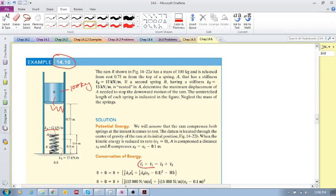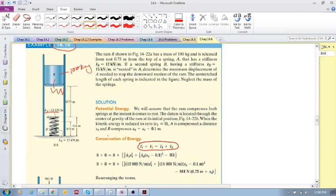They chose the datum through there to calculate the potential energy due to gravity. The kinetic energy at state one is zero. The potential energy at state one is zero because the mass is at the datum, and these springs are unstretched and uncompressed, so there's no potential energy in the springs.